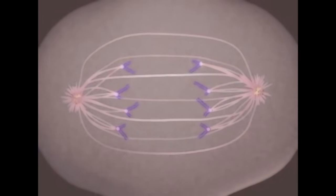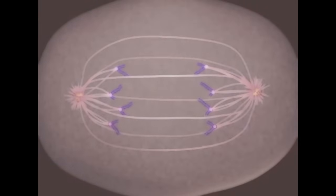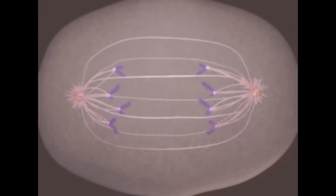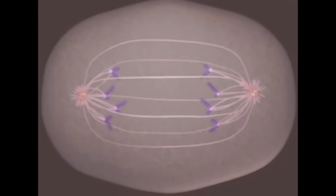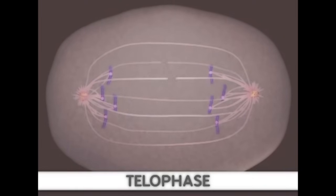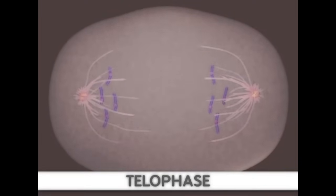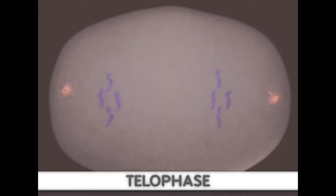Telophase is the final stage of mitosis. It is here that the components of the new cells begin to appear. At this point, the spindle fibers are broken up. A new nuclear membrane surrounds the chromosomes at the end of each cell, and the chromosomes uncoil and return to an uncondensed state.